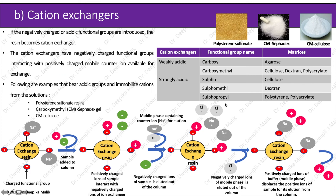Now let us see what are cation exchangers. If the negatively charged or acidic functional groups are introduced, the resin becomes a cation exchanger. The cation exchangers have negatively charged functional groups interacting with positively charged mobile counter ions available for exchange. Examples include polystyrene sulfonate resins, carboxymethyl Sephadex gel, or carboxymethyl cellulose. The table gives examples of weakly and strongly acidic cation exchangers. If carboxymethyl functional groups are attached to the agarose, cellulose, dextran, or polyacrylate resins, weak cation exchangers are formed. For strong cation exchangers, sulfo functional group is attached to cellulose, sulfomethyl group to dextran, and sulfopropyl group to polystyrene or polyacrylate resins.